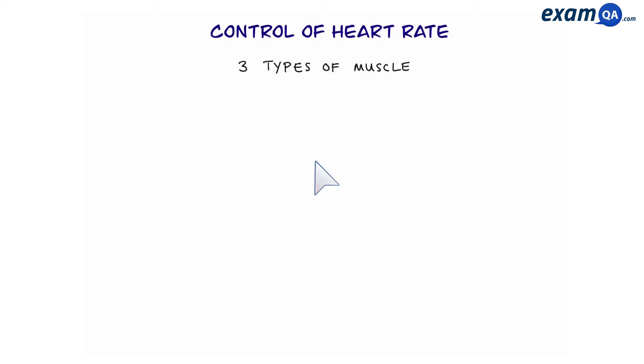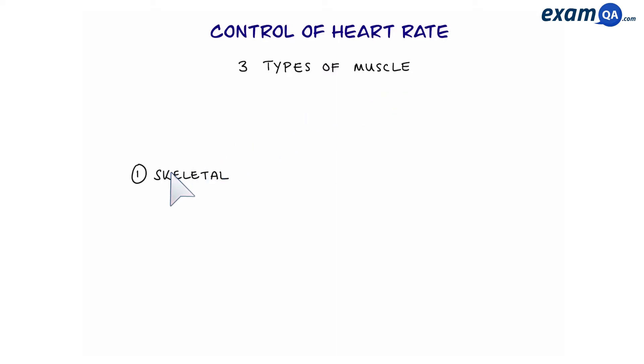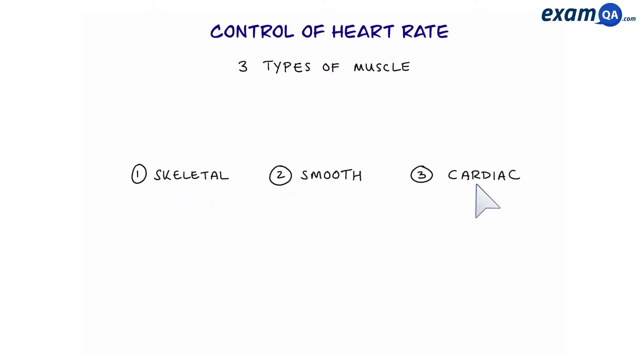Welcome. In this video we're going to be learning about how the heart rate is controlled. Now first of all, we have three types of muscle in our body: skeletal muscle, smooth muscle, and cardiac muscle.